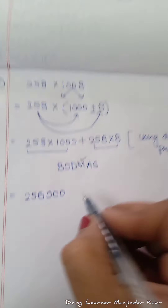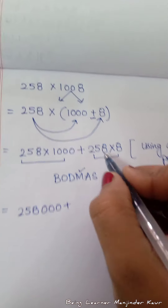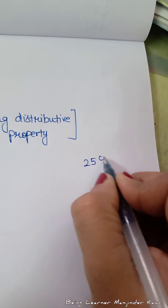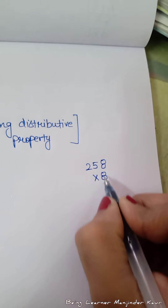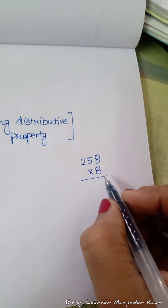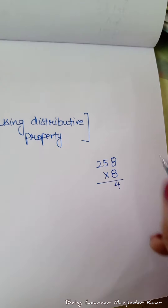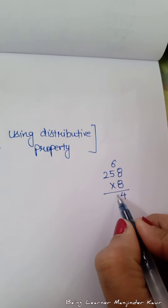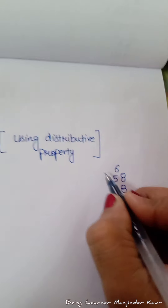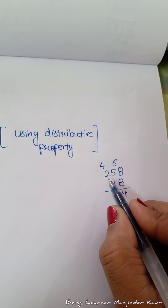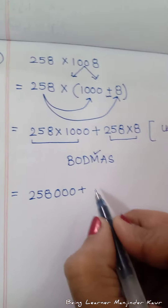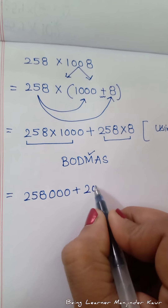258 multiply 1000 equals 258000 — आप लोगों के लग जाएंगे। आगे हम लोगों ने 258 को 8 के साथ करना है। Side पर इसकी multiplication कर लेते हैं: 8×8=64, 8×5=40 plus 6=46, 8×2=16 plus 4=20। तो यहाँ पर लिखेंगे 2064।